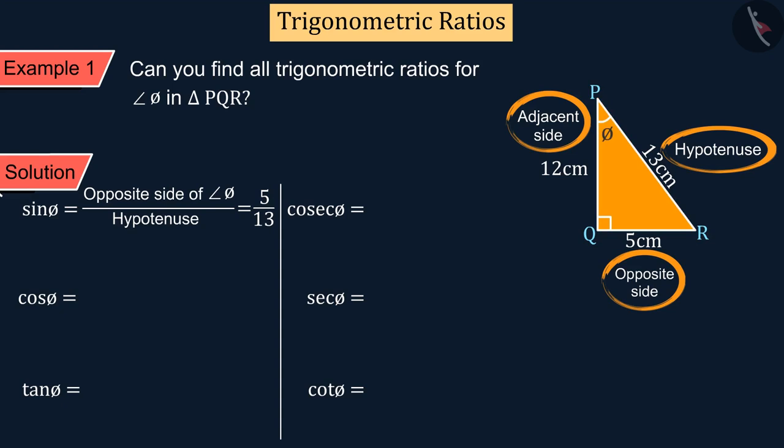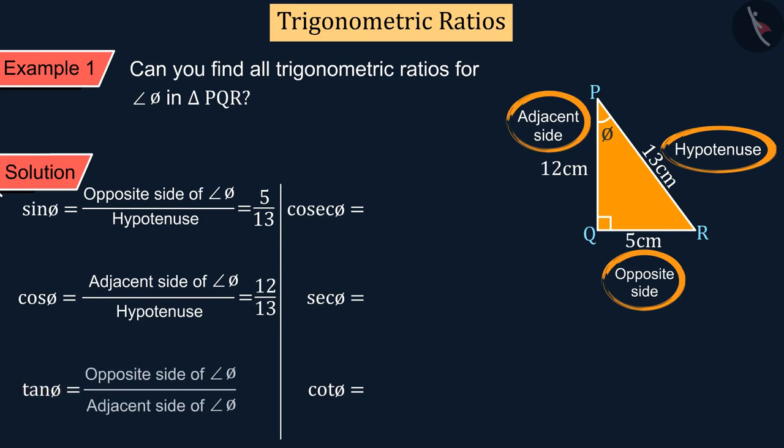Similarly, we know that cos θ is equal to the ratio of adjacent side to the hypotenuse, from which we get 12 upon 13. Tan θ will be equal to the opposite side to the adjacent side.